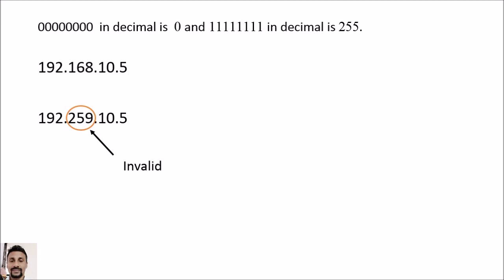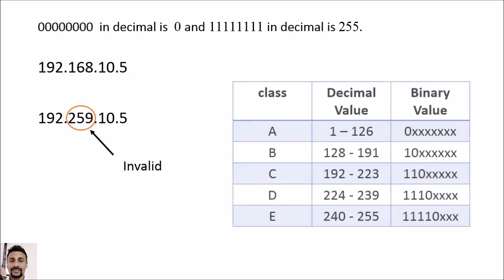Now we'll see how to find the class for an IP address. We use the first portion of the IP address — either its decimal or binary value — to determine the class.